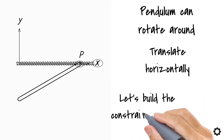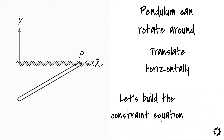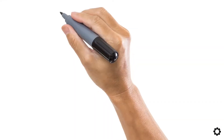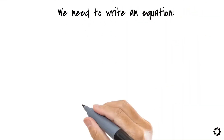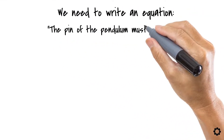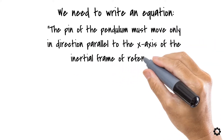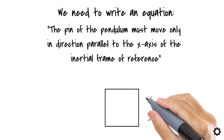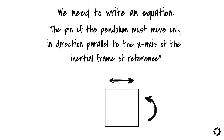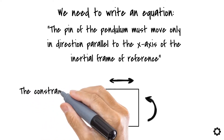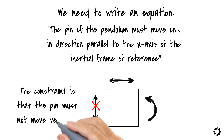Let's build the constraint equation for this model. Remember, there is only one constraint to express mathematically. Mathematically speaking, we need to write an equation that says that the pin of the pendulum must move only in a direction parallel to the x-axis of the inertial frame of reference. We don't care how the rotation and horizontal displacements are, but we do care that the pin does not move vertically. The constraint is that the pin must not move vertically.